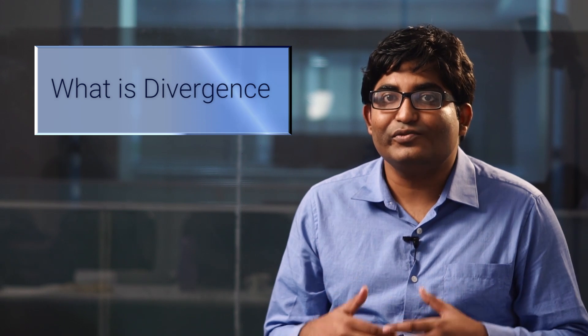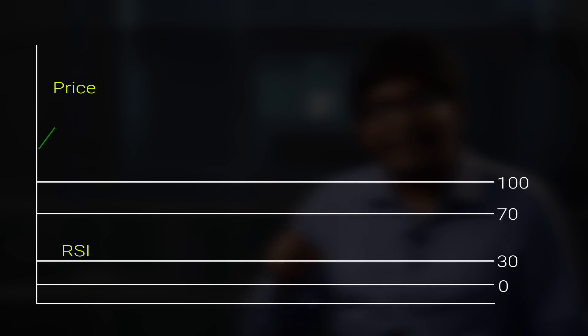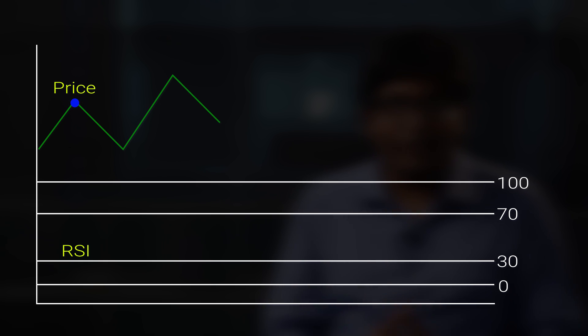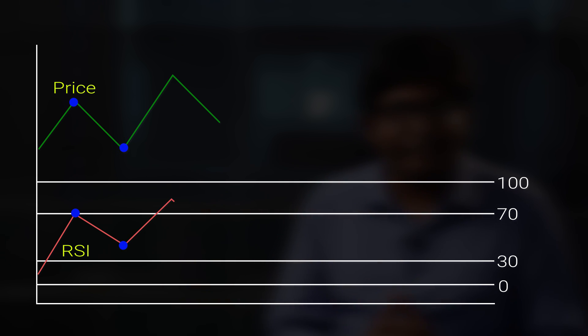Let us understand what the word 'divergence' means. In an uptrend, the price moves higher, higher, and higher, making higher highs and higher lows. So the indicator — the RSI in this case — we expect to also move higher in tandem. But what happens is that towards the end of an uptrend, the RSI fails to keep up with the pace of the price movement.